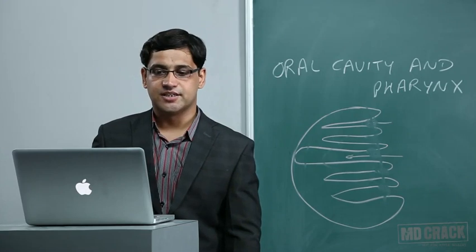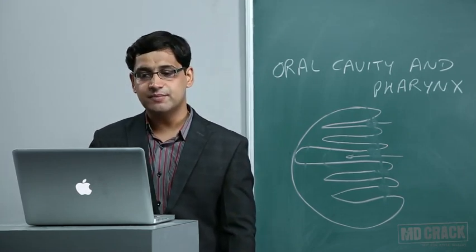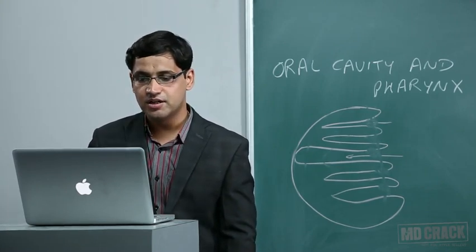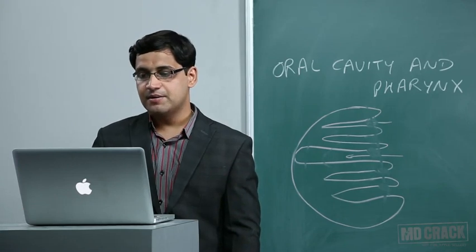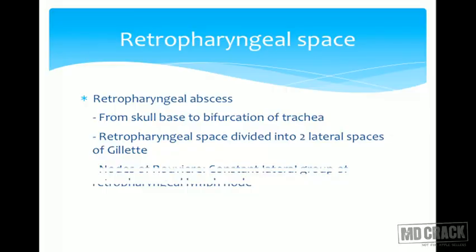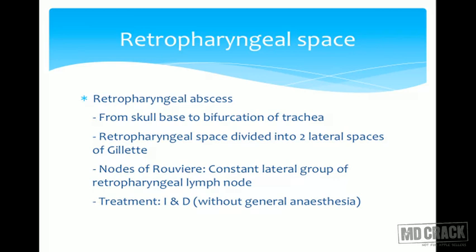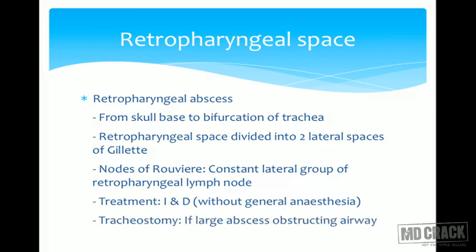Retropharyngeal abscess: the retropharyngeal space extends from the skull base to the bifurcation of the trachea, and is divided into two lateral spaces known as the lateral spaces of Gillette. Nodes of Rouvière are the constant lateral group of retropharyngeal lymph nodes. Treatment is incision and drainage without general anesthesia — if the patient is anesthetized, aspirated pus could be fatal. If the pus is large and obstructing the airway, prophylactic tracheostomy is performed.